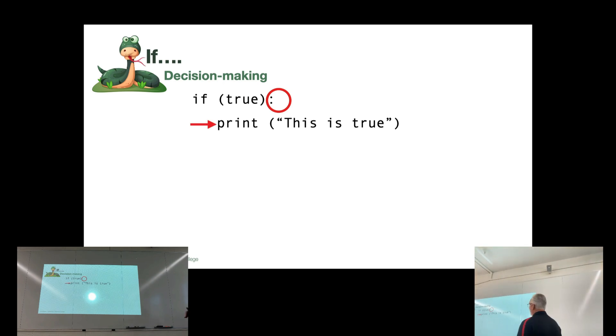And the lines beneath that, they get executed if that is true, are indented. So this entire code block, whether it's one line or a million lines, has to be indented. They all have to be indented the same amount.